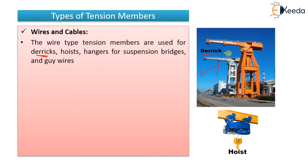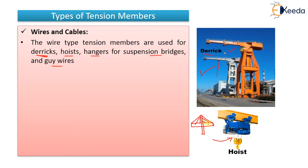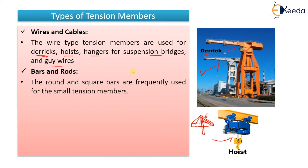The wires used in derricks, as you can see in the picture, come under the category of tension members. Then we have hoists, hangers for suspension bridges, and guy wires — all of these involve cables subjected to tensile forces. The hangers used in suspension bridges — where cables support a girder or slab — are also types of tension members subjected to tension.